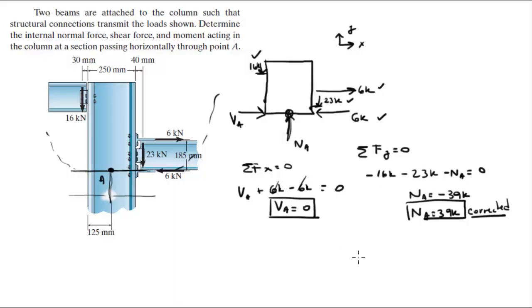Last but not least, assuming counterclockwise is positive, the moments at A are equal to zero. So MA plus the moment created by the 16k, which is 16k times 0.155—why 0.155? 30 millimeters plus 125 millimeters is the distance of the arm.